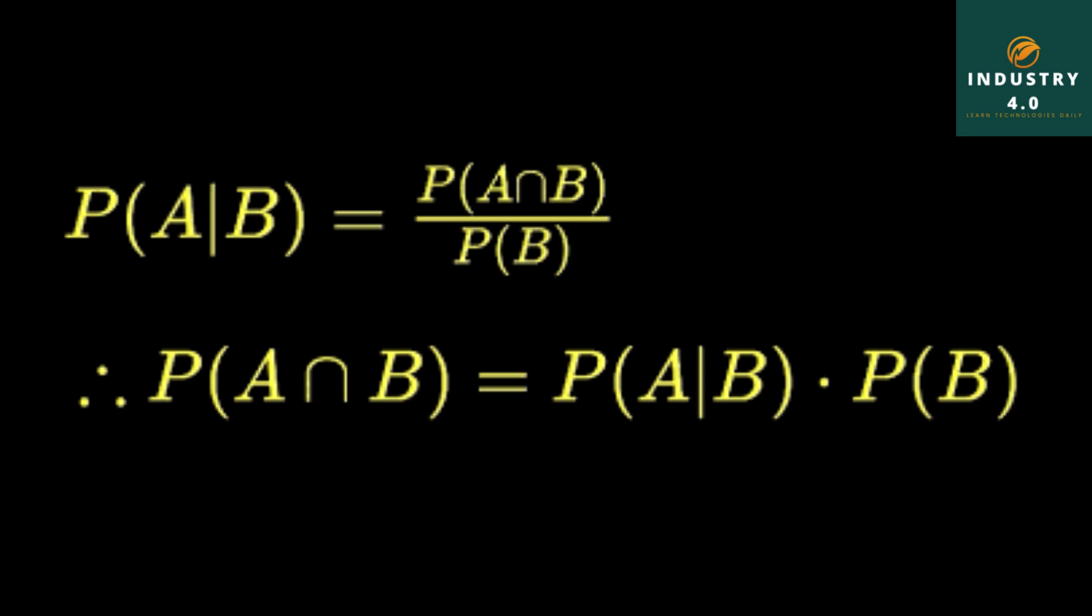If A and B are independent events, from the definition of independent events, the occurrence of event A is not dependent on event B. Therefore P(A|B) equals P(A).